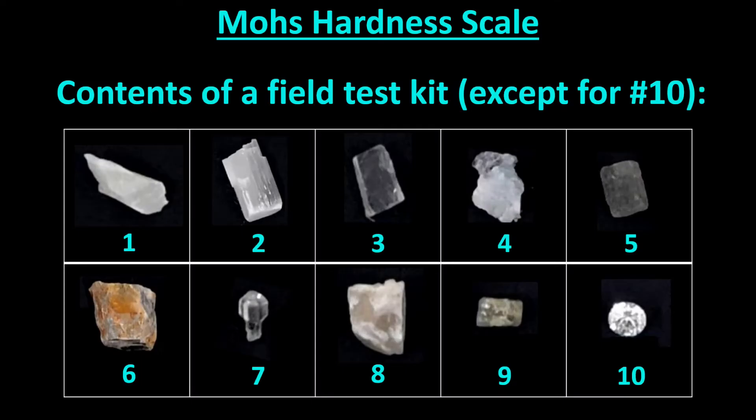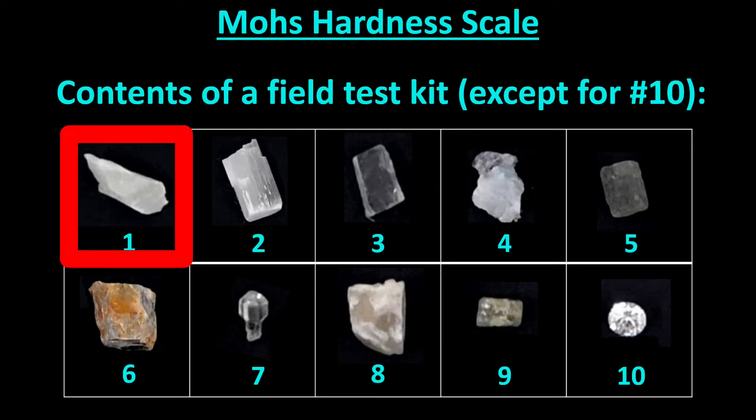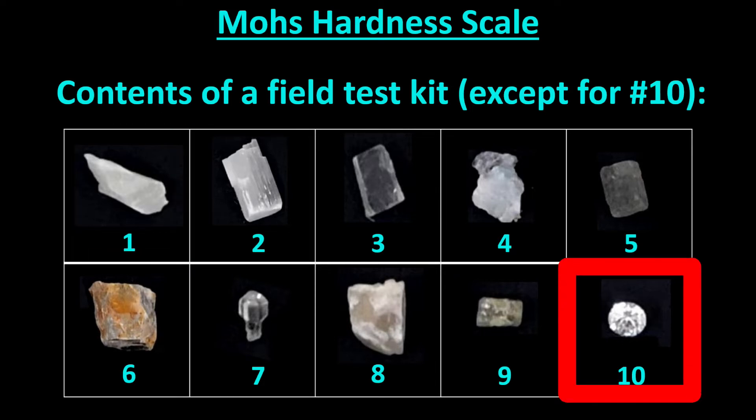Each of these 10 minerals has a different level of hardness, so we can put them in order from least hard, which has a value of 1, to hardest, which has a value of 10. Although few people memorize all the names and their numbers, most students remember that talc is the softest mineral in the Mohs hardness scale and diamonds are the hardest mineral in the Mohs hardness scale.